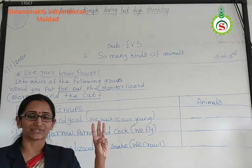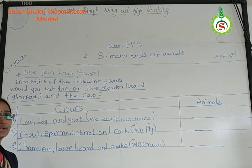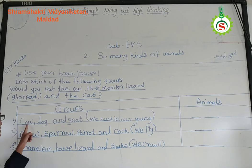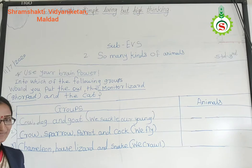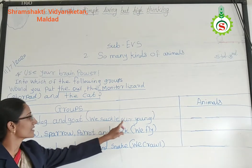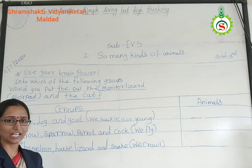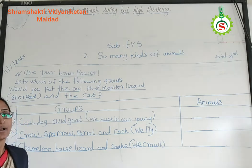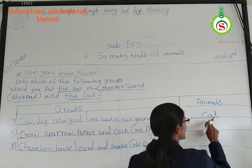I have written here three group names. Look at these three groups. First group: cow, dog, and goat. These all are animals in the bracket — they suckle their young. Which animals suckle their young ones? Correct — cat! Cat also suckles her young ones. So write here: cat.